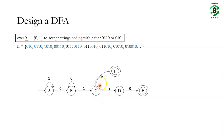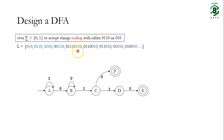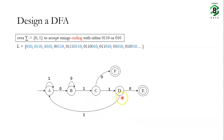State c is already complete — we have given two transitions, one for input 0 and one for input 1. Now let's complete state d. If we receive a 1 in state d, we have so far received 011. The only way to complete the pattern is to go to a state from which receiving 0110 or 010 is still possible. So on state d for input 1, we take the machine to state a.